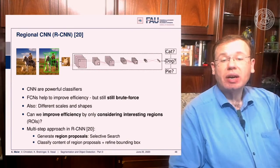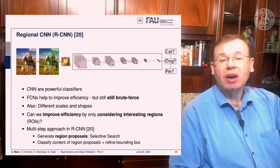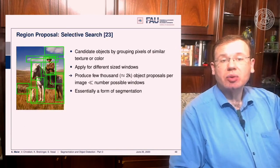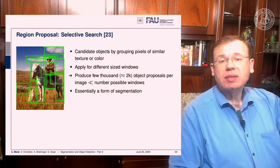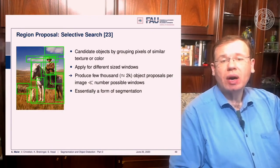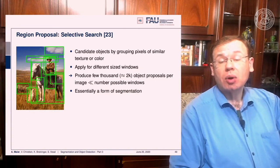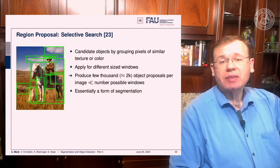RCNN uses a multi-step approach: you generate region proposals via selective search and then classify the content of those region proposals with a refined bounding box. Region proposals are generated by grouping pixels with similar texture and color, producing a few thousand object proposals — around two thousand per image — which is much smaller than the number of all possible windows. This is essentially based on a form of segmentation.